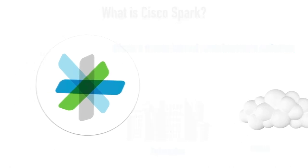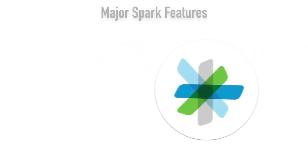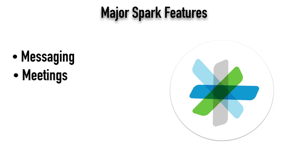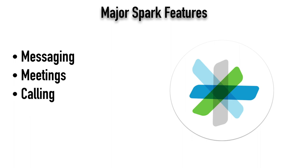Some of the major features of Spark include messaging — you can use this as an instant messaging client, and it works on major platforms like Microsoft Windows, Mac OS, and mobile devices like Android and Apple iOS. In addition to messaging, it can also work with WebEx to give you an interface to go to meetings. You can use it for calling one another, setting up a video call or an audio call.